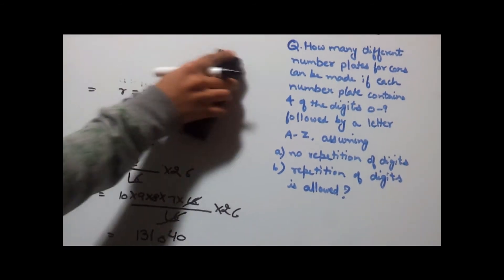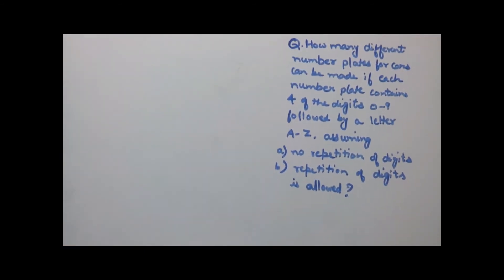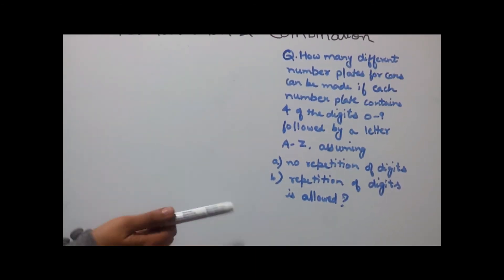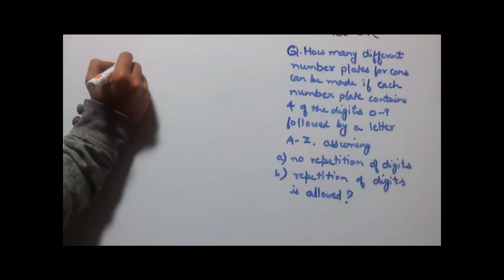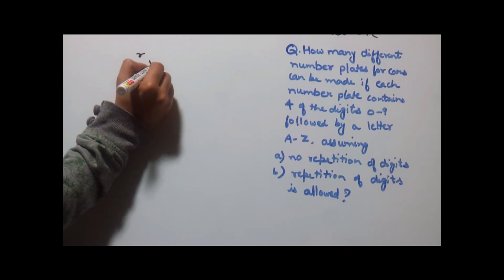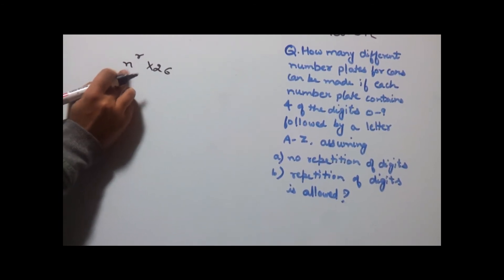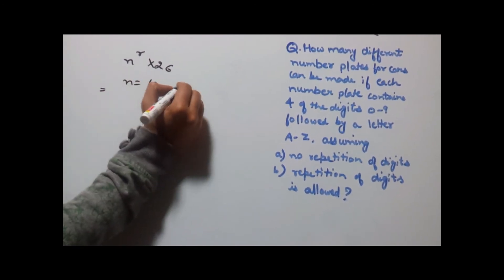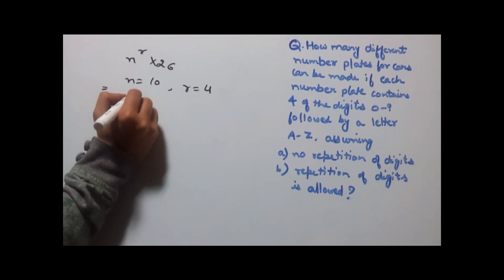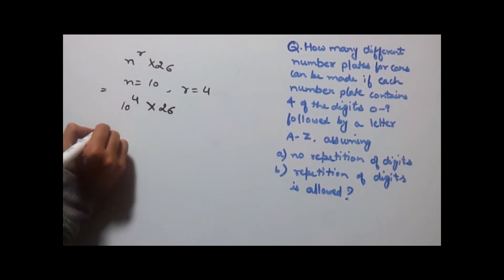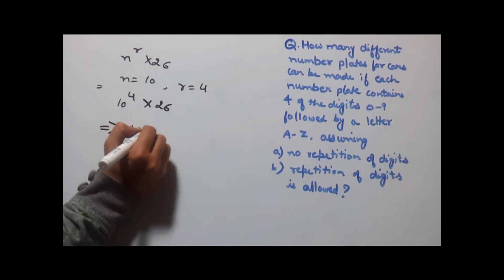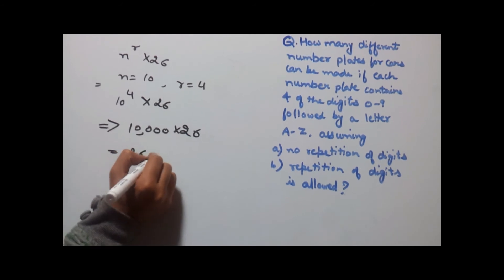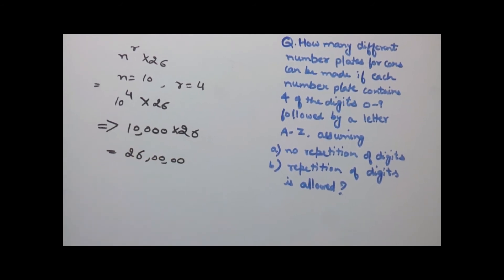Second part: repetition of digits is allowed. For repetition, the formula is n to the power r, multiplied by 26 for the alphabets. Here n = 10 and r = 4. So we get 10 to the power 4 × 26 = 10,000 × 26 = 260,000 as the answer.